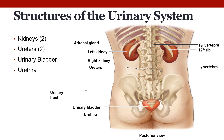Running from the kidneys to the bladder are two tubes called the ureters. These narrow tubes run alongside the spine and continually tighten and relax, forcing urine downward away from the kidneys. If urine backs up or is allowed to stand still, a kidney infection can develop. The ureters deliver urine to the urinary bladder, which is that triangular reddish organ. The walls of the bladder relax and expand to store urine; when the bladder contracts and flattens, it empties urine through the urethra.